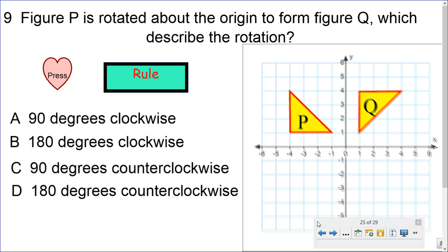Let's try this one. Figure P is rotated about the origin to form figure Q, which describes the rotation. Here we got figure P, that's the original shape, and now it's turned, or rotated, to figure Q. It looks like it got turned going to the right, because it's now on the right side. It looks like it got turned going that way. If we remember, that's going clockwise.